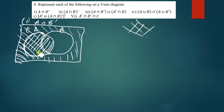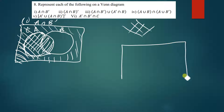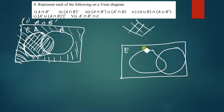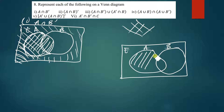If I draw this as the final drawing, it's going to be like this. My A is there, B is there — so this is my A intersection B complement.